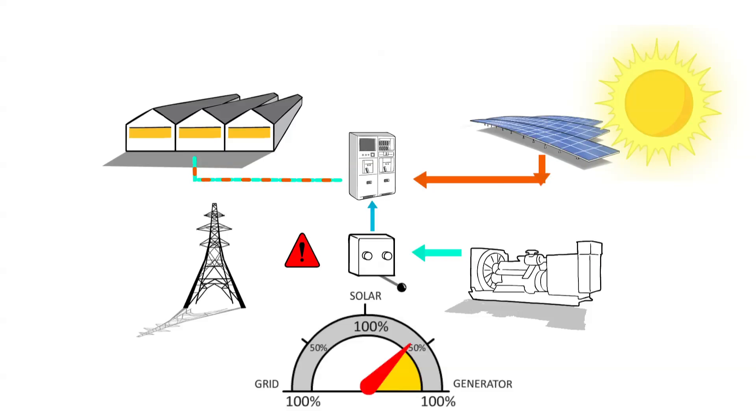The solar controls automatically reduce the demand for electricity from the generator when the solar installation is producing electricity, so you use less fuel.